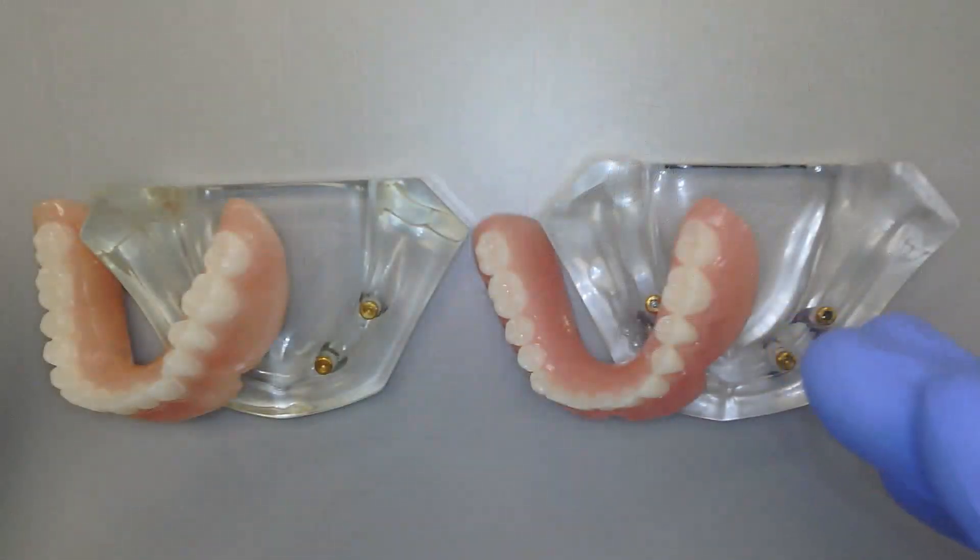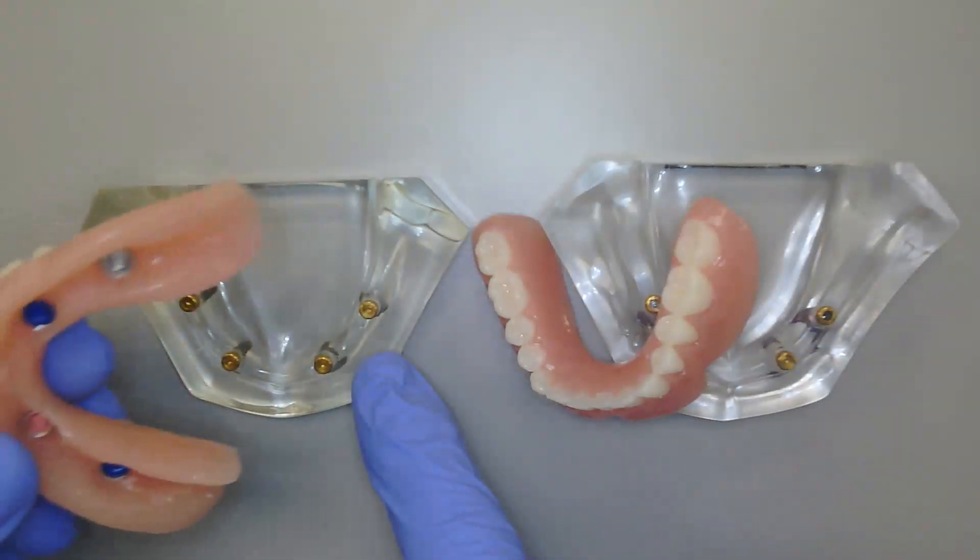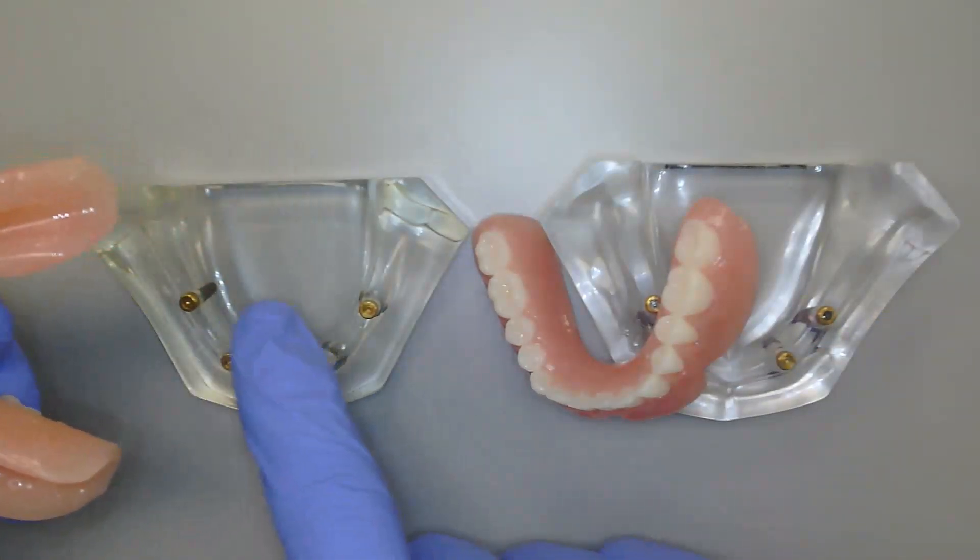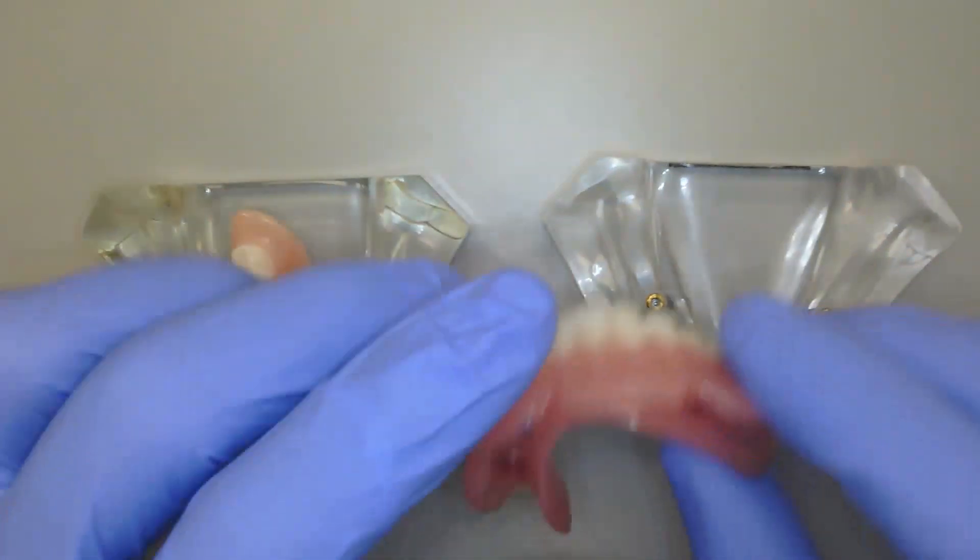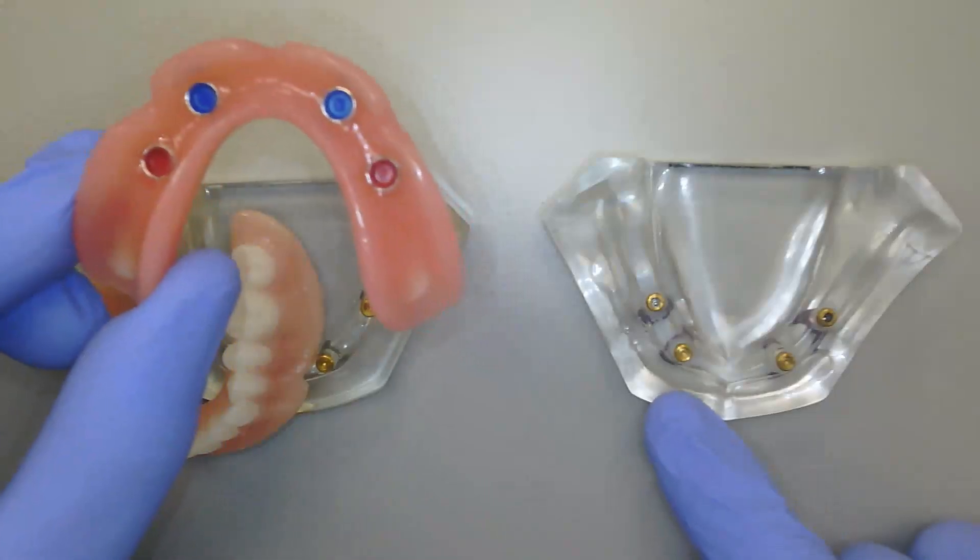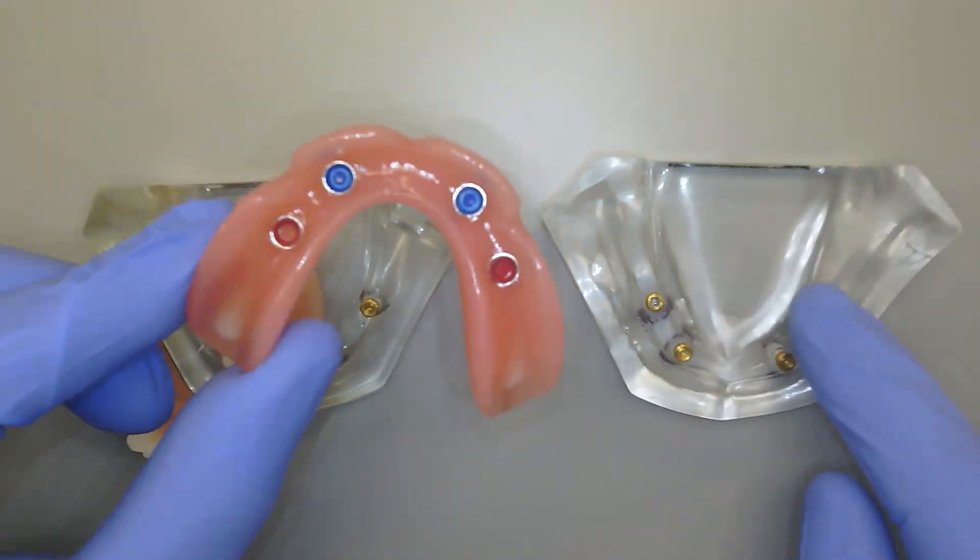In front of us, I have a couple of models. I've got our standard locator implant models with existing locator abutments, and I also have here to the right-hand side of the screen our locator angled model, which has our standard locator abutments in the front as well as the locator angled in the back.